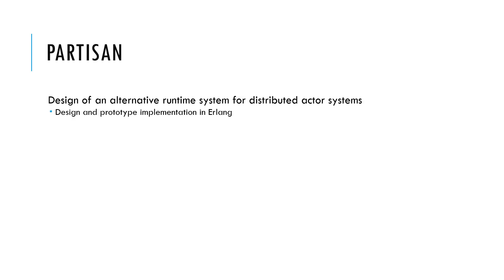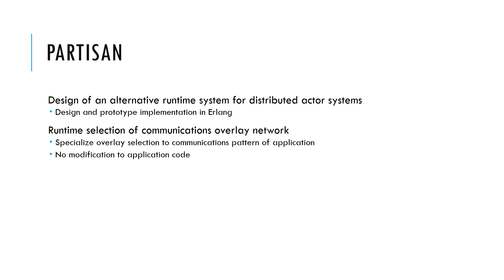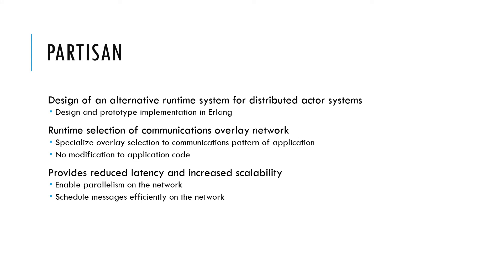In our talk, we present the design of a new runtime system called Partisan that alleviates the scalability limitations. Partisan first allows the programmer to specialize the network's topology at runtime to the application and communication patterns without requiring recompilation or code changes, thereby enabling better scalability through larger clusters. Partisan also exposes controls to the application developer and the programming model to enable parallel communication on the network through the use of additional TCP connections and a novel message partitioning technique, thereby enabling better scalability through reducing latency and increasing throughput.